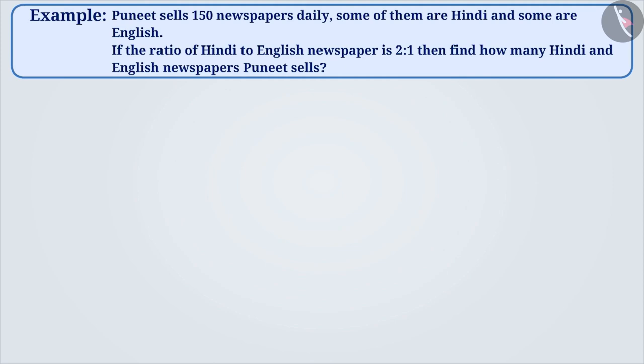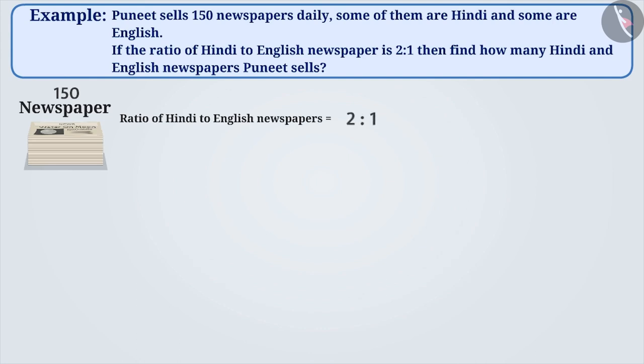From the given example, we can say that out of 150 newspapers, the ratio of Hindi to English newspapers is 2 is to 1. Can you tell what this ratio represents? Think about it.